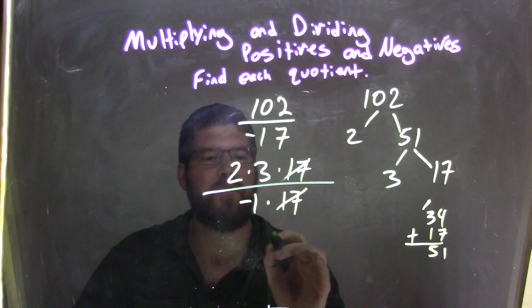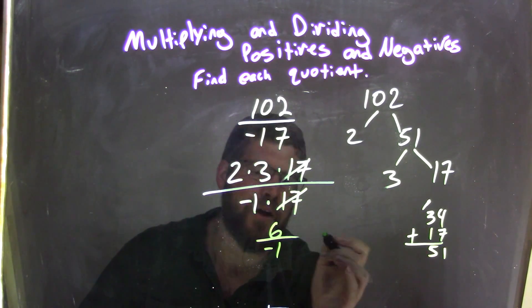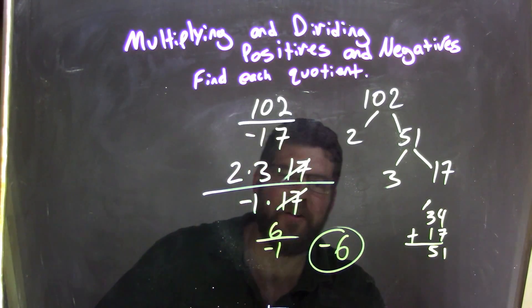So 17 is canceled, and 2 times 3 is just 6 divided by negative 1. And well, 6 divided by negative 1, we should know by now, it's just negative 6, which is our final answer.